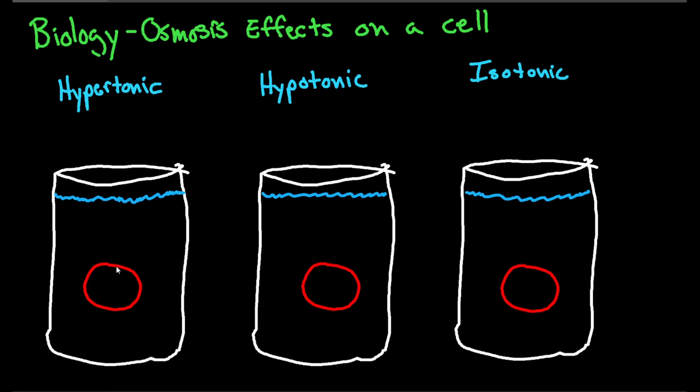We have our red blood cells, and now we need to determine what is going to change with them — the shape. They want to know what a hypertonic solution does to the shape of a red blood cell.